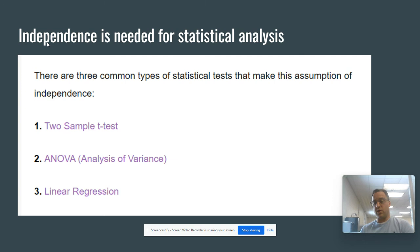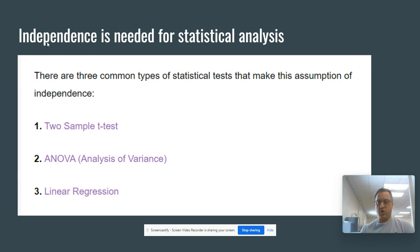The same thing applies with ANOVA or linear regression. If you have dependent variables, you might want to use a paired t-test — there are different options — but it's really important to know about your data before you determine what statistical analysis is appropriate.